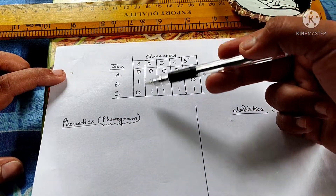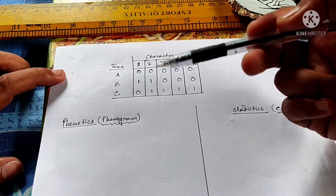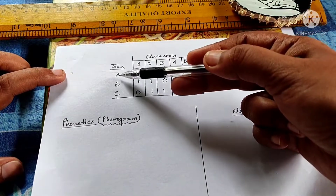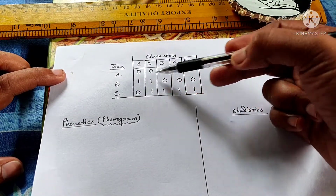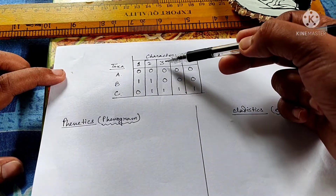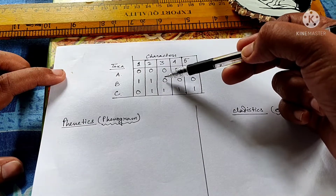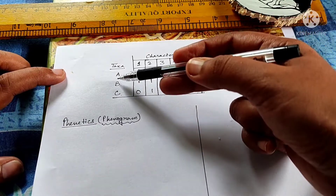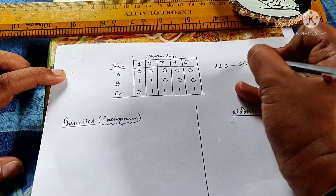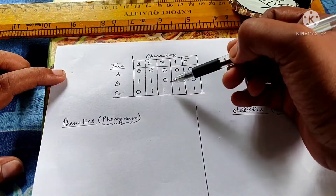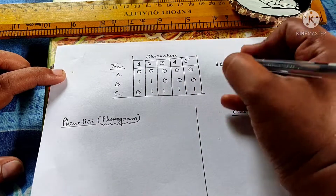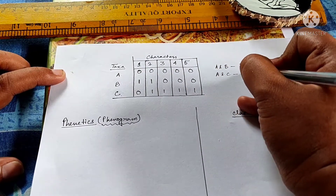In phonetics, we just look at the characters and their character states and try to find out how many character states are similar between two taxa. Between A and B, how many character states are similar? Three — because species A and B both share characters three, four, and five; they both share zero in these three characters. So A and B have three out of five similarity, whereas A and C have only one similarity based on character number one, with both sharing zero. So A and C have only one out of five similarity.